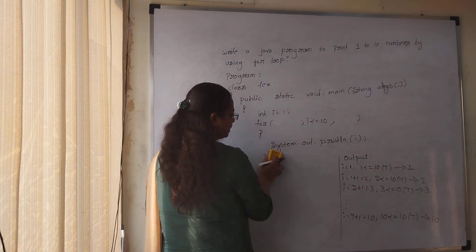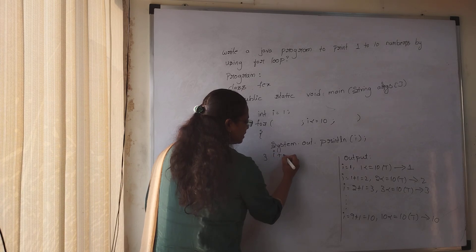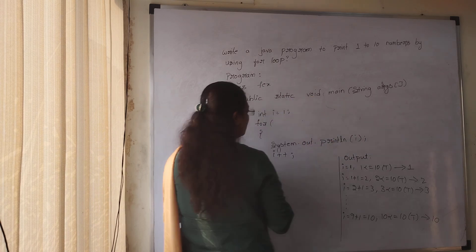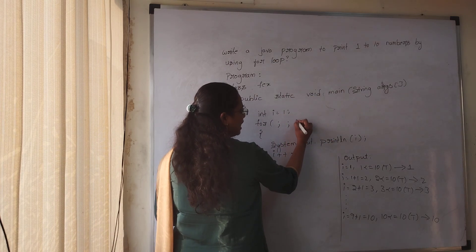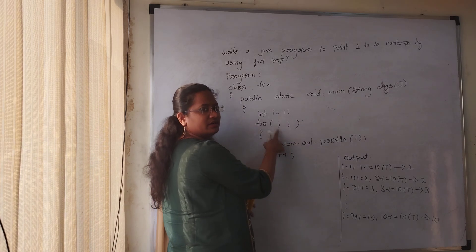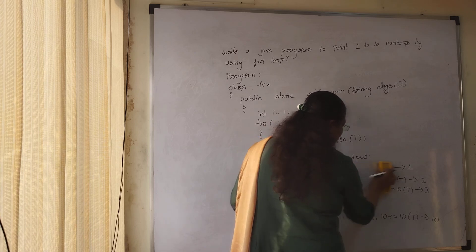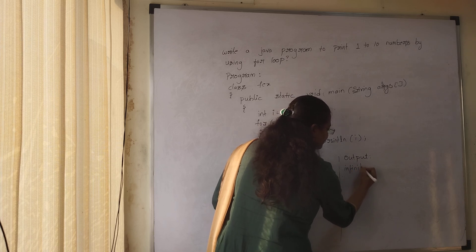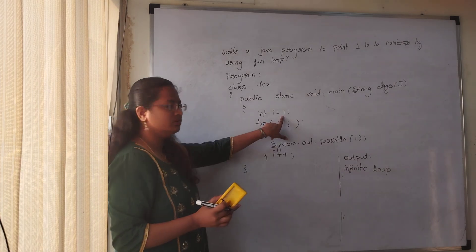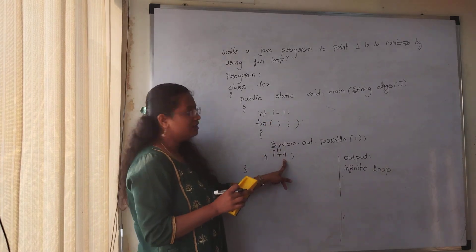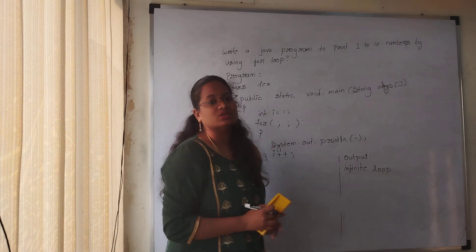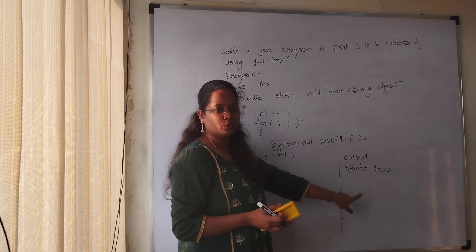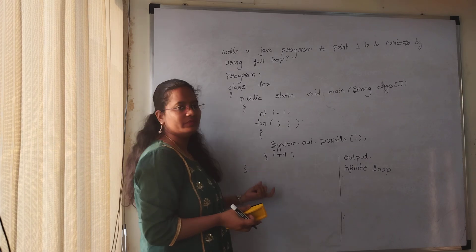If you are not writing any condition in the for loop — meaning you leave an empty for loop — it will be considered an infinite loop. Because you are initializing the value and giving the increment operator but not giving any condition, the loop will execute endlessly and you get an infinite loop output. In this way we can work with for loops.